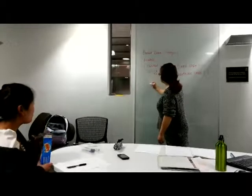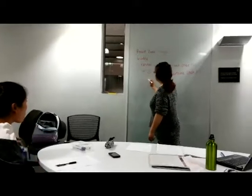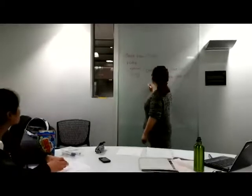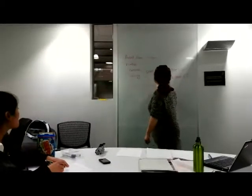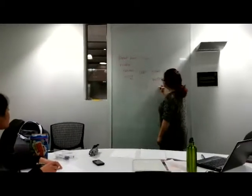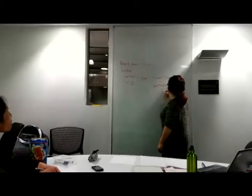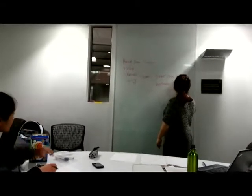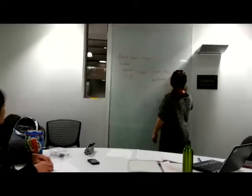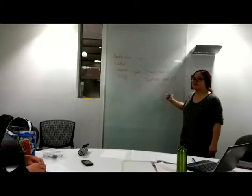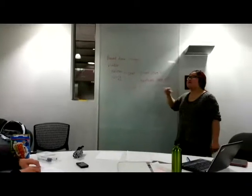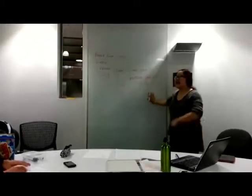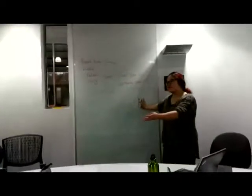The total cost is the fixed cost plus the variable cost. Does that make sense? So far, these are the money that I have to pay and spend.